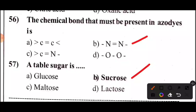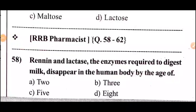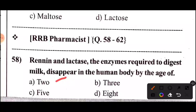Next question: Lactase, the enzyme required to digest milk, disappears in the human body by the age of — 5 seconds. Answer: Option A — age 2. Lactase disappears in the human body by the age of 2.